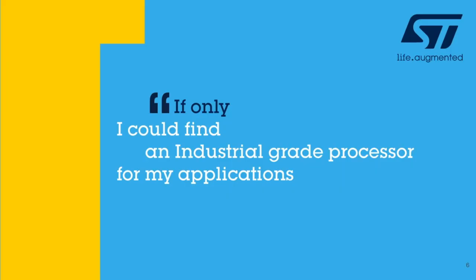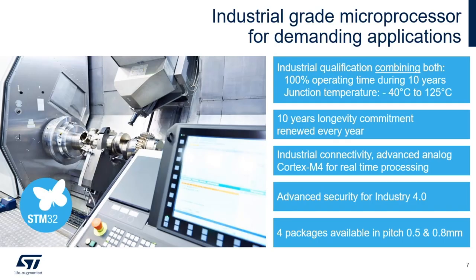Perhaps your end application requires an industrial-grade processor — the STM32 MP1 will meet those needs. For projects requiring industrial-grade, the MP1 can support up to 125°C junction temperature in the 650 MHz variants. Since the introduction of the STM32 MP1, we've conducted extensive testing targeted at industrial applications. The result is that we can meet an industrial mission profile with 100% operating time over 10 years. When it comes to reliability and continuity of supply, we renew the 10-year longevity commitment every year, and commit to produce the STM32 MP1 until at least January 2030.